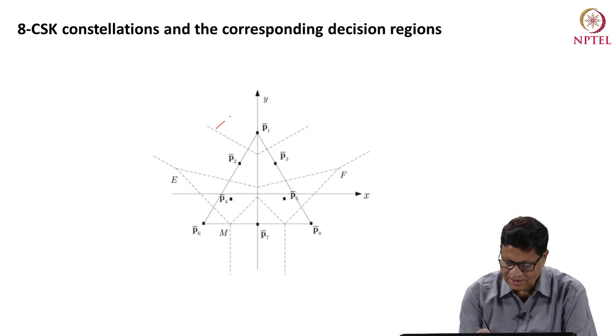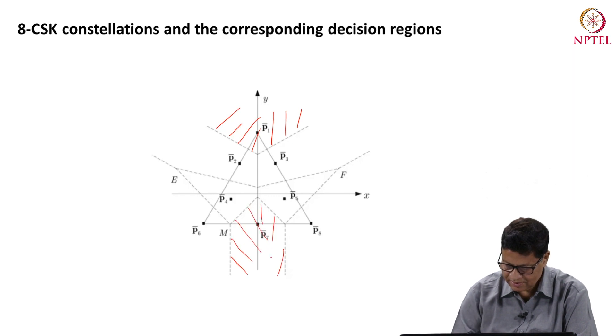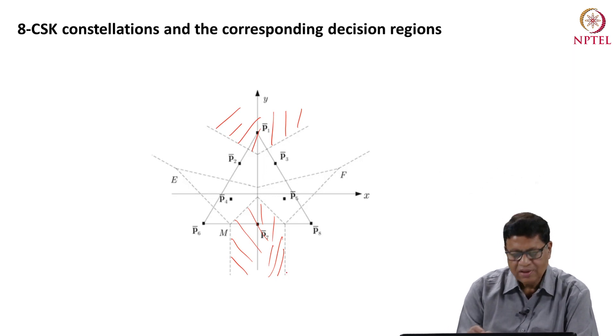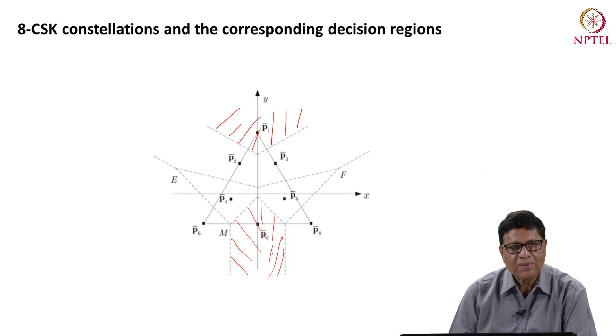For P1 this is the decision region for example, for P7 this is the decision region. Similarly, for other constellation points. In the similar way one can calculate the probability of symbol error rate for 8 CSK system.